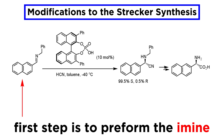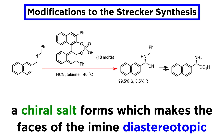The first step is to preform the imine, such as the one shown here. Then when the imine is treated with this chiral acid, a chiral salt forms in situ, and now the two faces of the imine are no longer equivalent, as one becomes more hindered than the other. The two faces are called diastereotopic, because the transition states leading to the S and the R enantiomer of the product are diastereomeric, and one is kinetically preferred over the other.